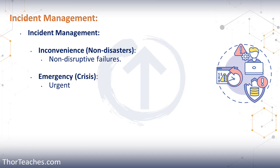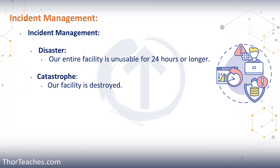Then we had an emergency — this is urgent, we need to do something right now, and many times this has to do with the protection of property or life. The next one was a disaster, where our entire facility is down or unusable for 24 hours or more — that could be a snowstorm or something more dramatic where our team can't get to work and can't work from home. And then as the last definition, we had a catastrophe, which is where our entire facility was destroyed.